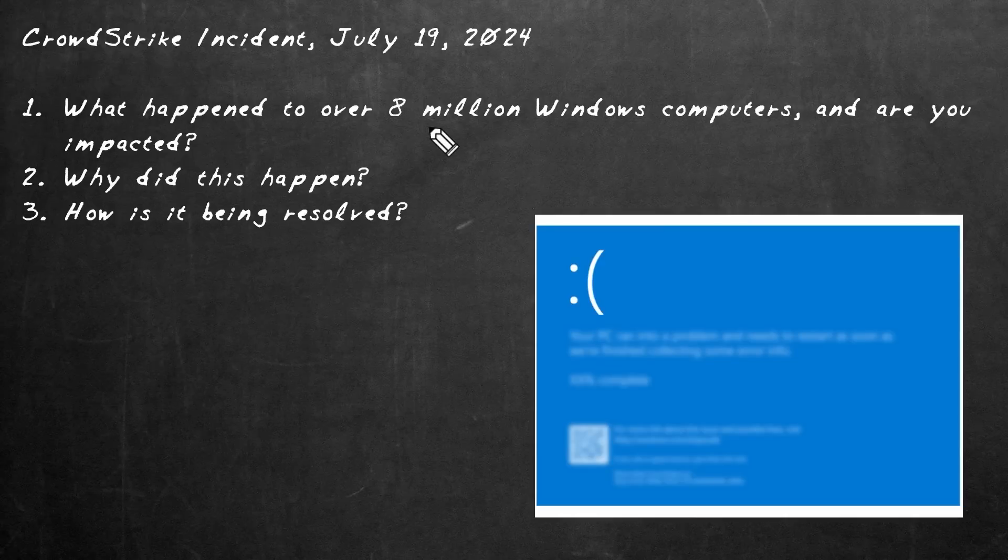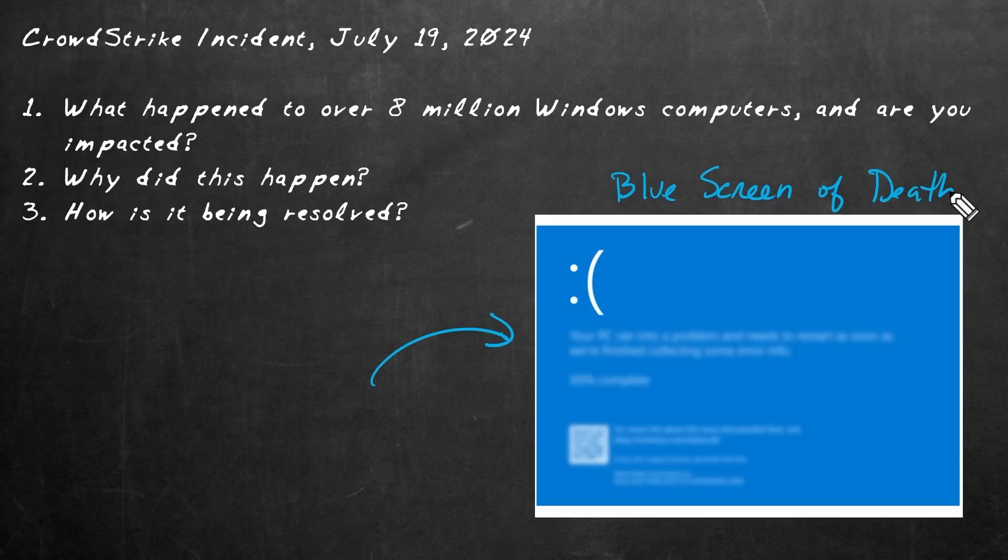So let's begin with question number one: what exactly happened to over 8 million Windows computers and are you impacted? First of all, the result looks like this. This is a representation of the blue screen of death or as his friends call it, BSOD. For the question of are you impacted, the answer is yes. Even if you personally didn't have a blue screen of death on your Windows computer, it's very likely there were interruptions to other services. So how in the world did this occur? Let's tackle that next.